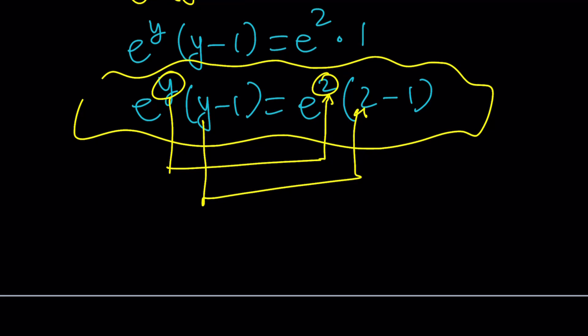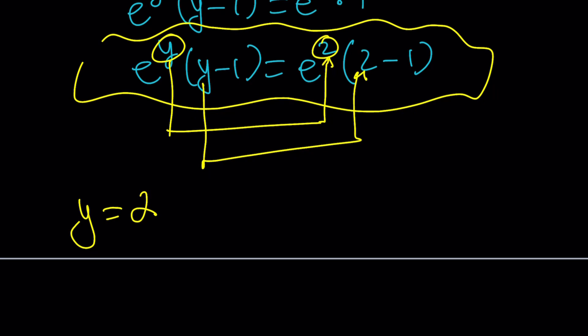And that means y is 2. But what is y? Y is ln x. Awesome. Let's set it equal to ln x. And then again, x is e to the ln x. And ln x is 2. So x is equal to e squared. That would be the answer.